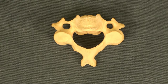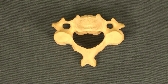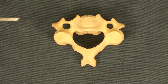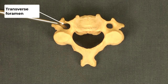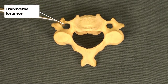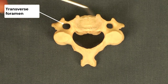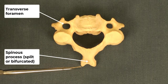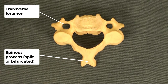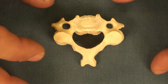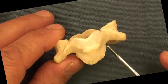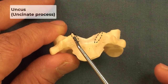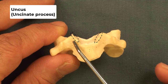In this shot, we want to walk you through the anatomy of the typical cervical vertebra. The characteristics of the typical cervical vertebra include: a foramen or opening in the transverse process known as the transverse foramen — one on each side — and the spinous process is split or bifurcated. Also, in some cervical vertebrae, there is a process on the superior aspect of the body on the side called the uncus or uncinate process.